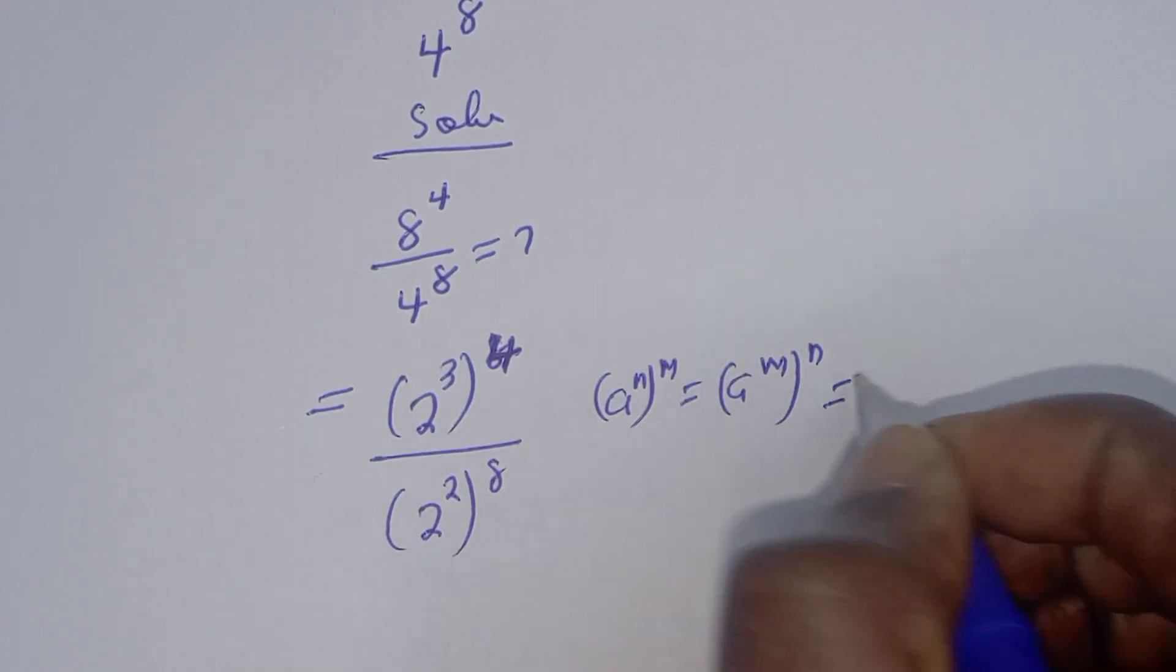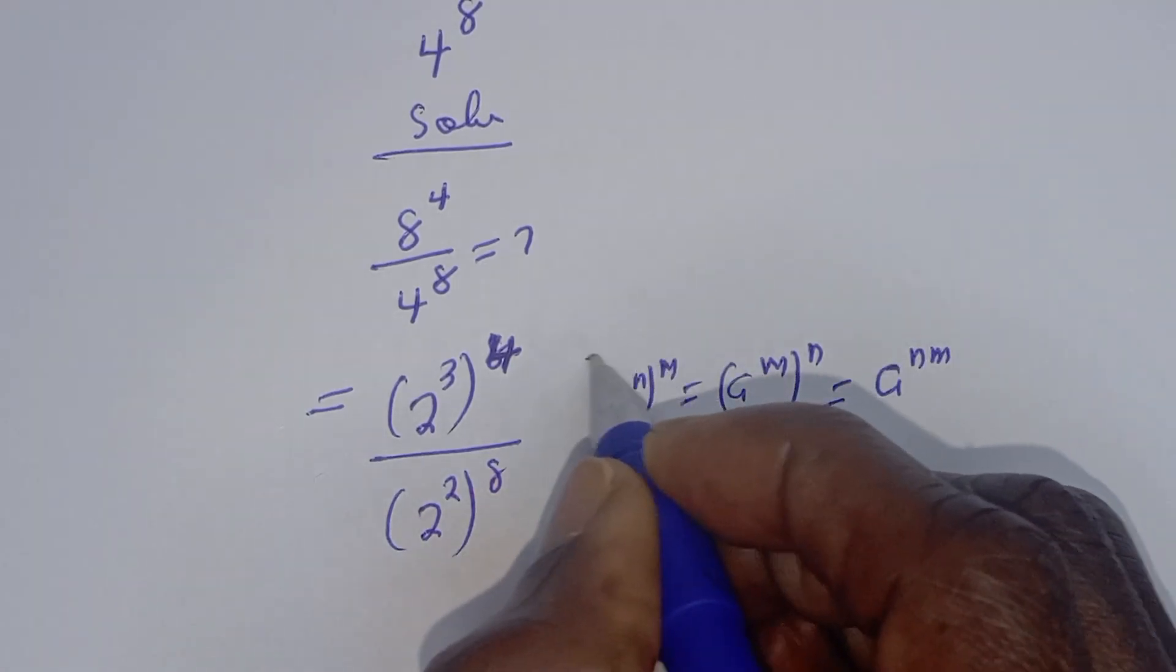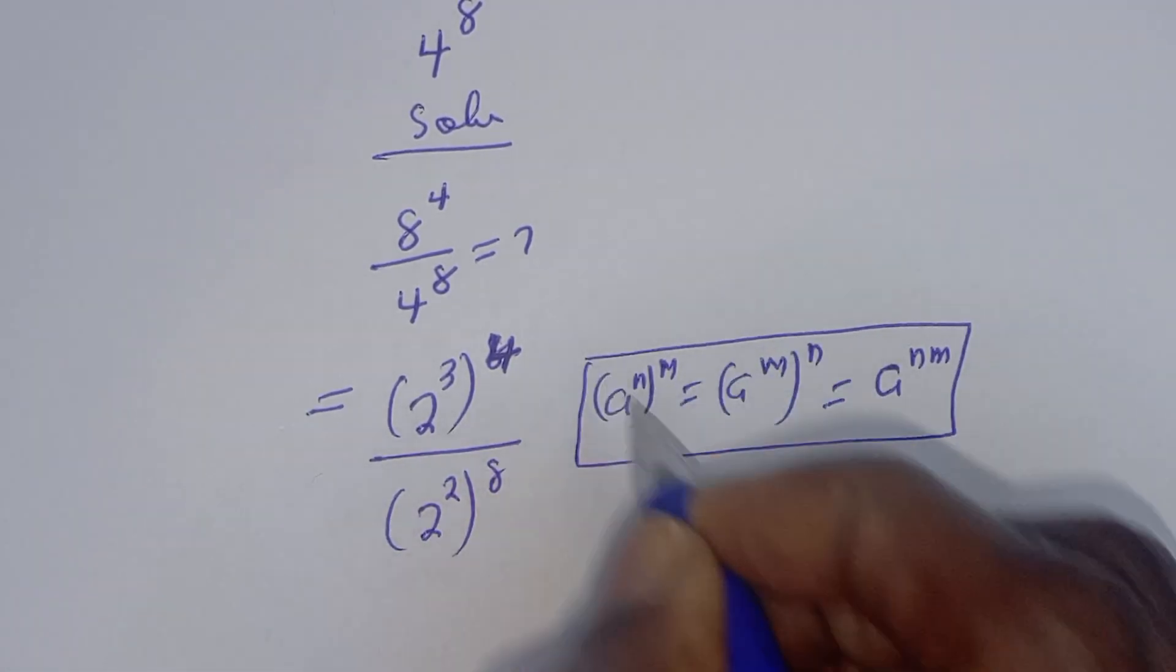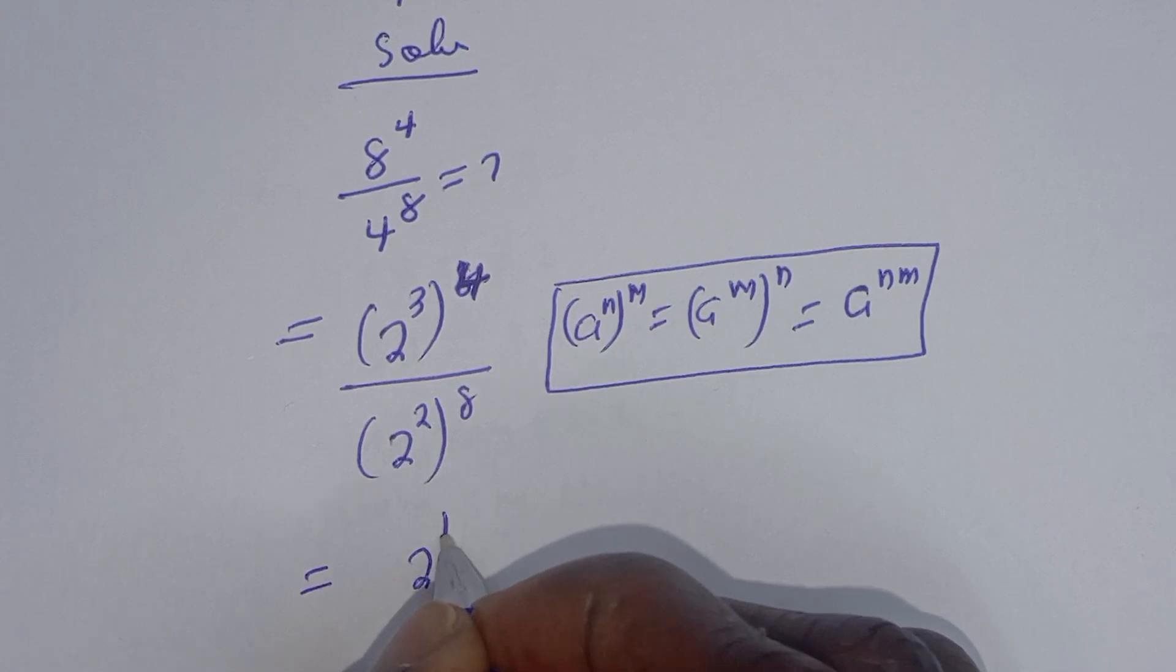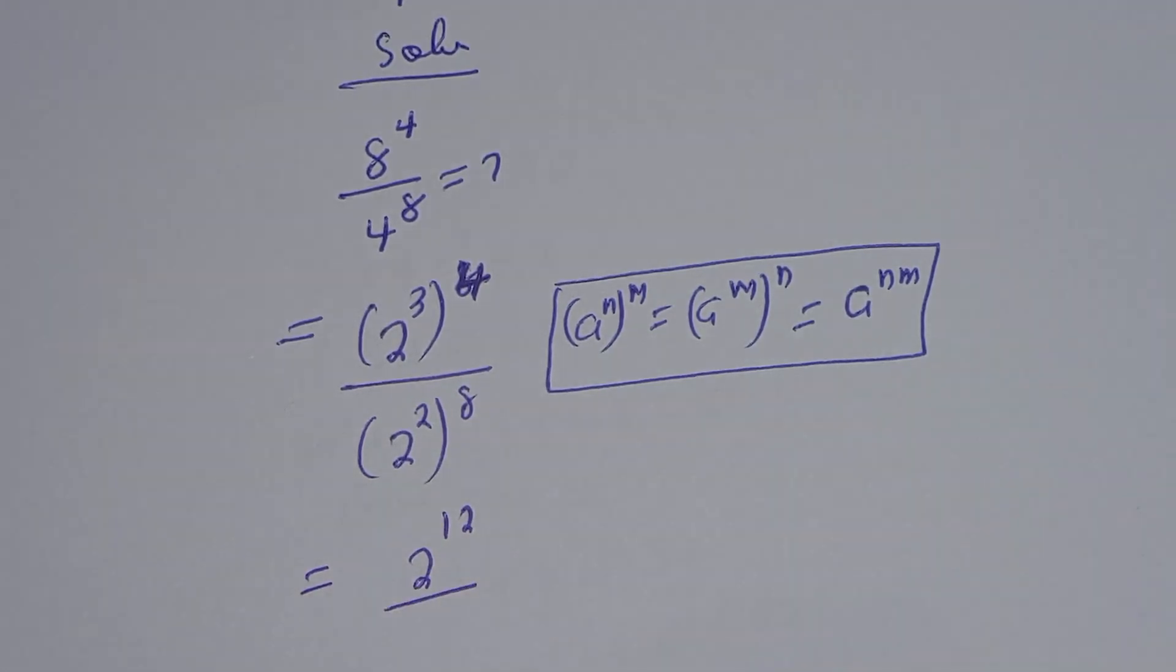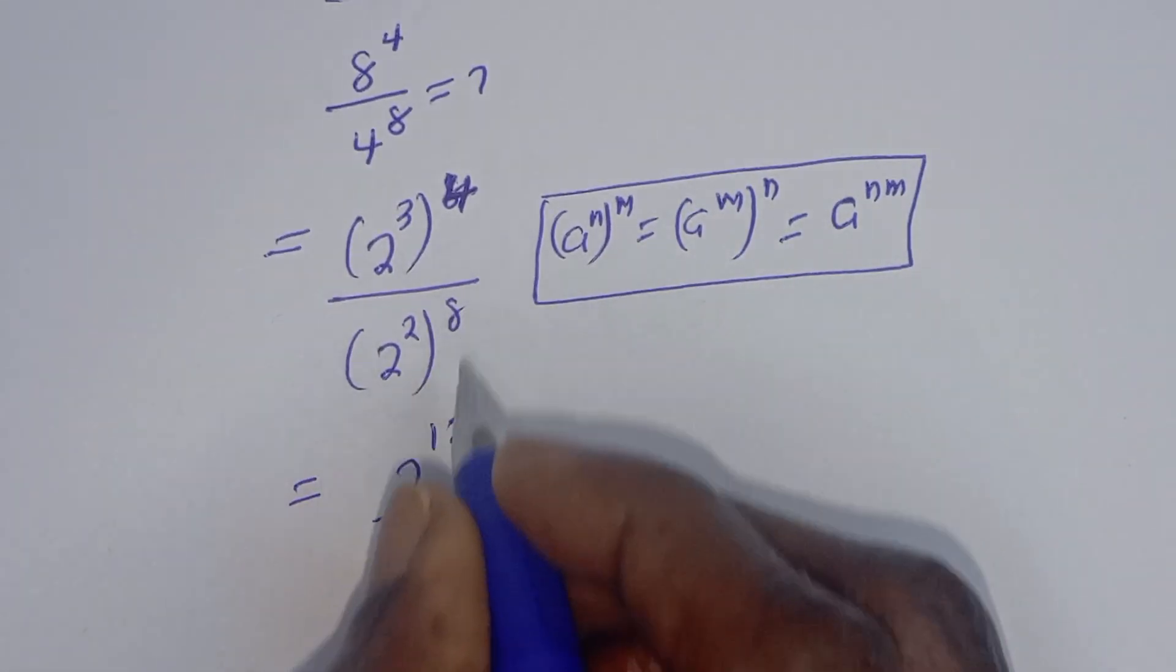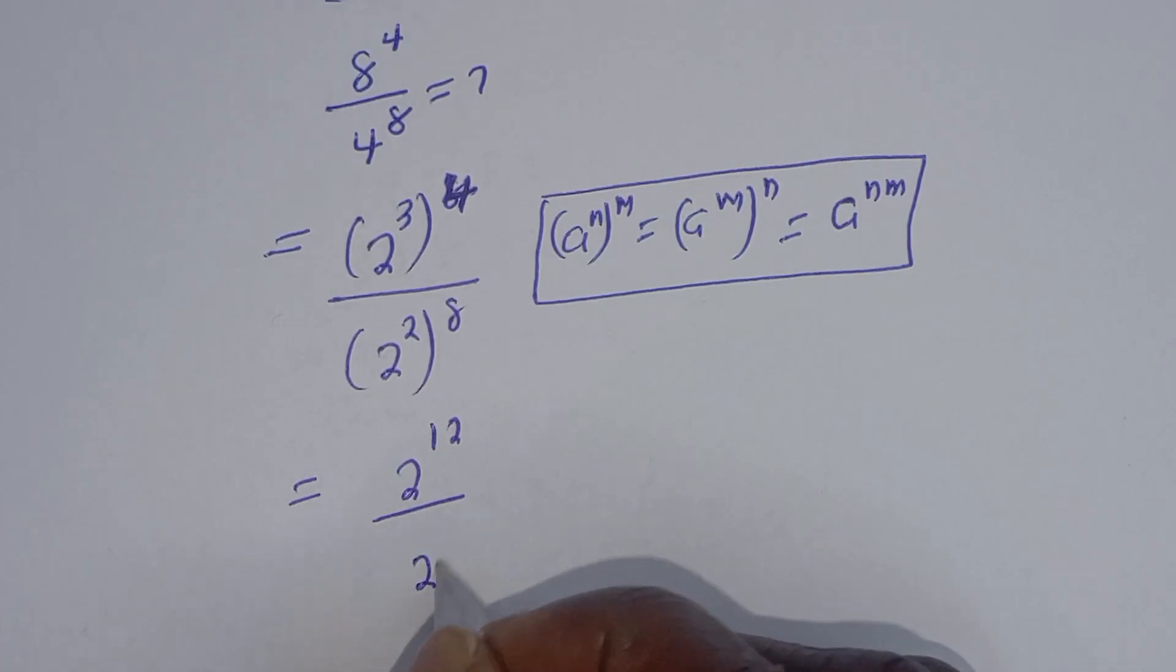This can be written as 2 raised to power 3 times 4, that is 12, over 2 raised to power 2 times 8, that is 16.